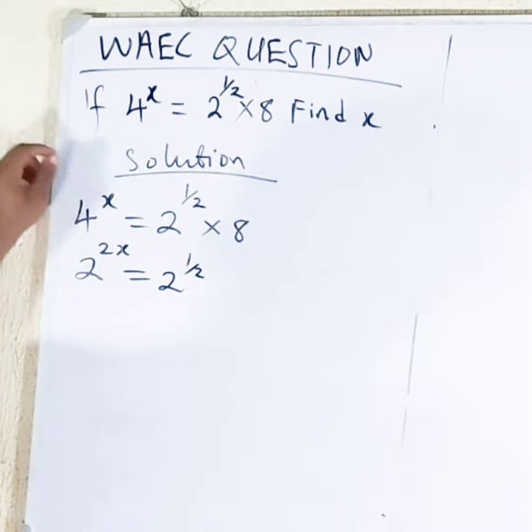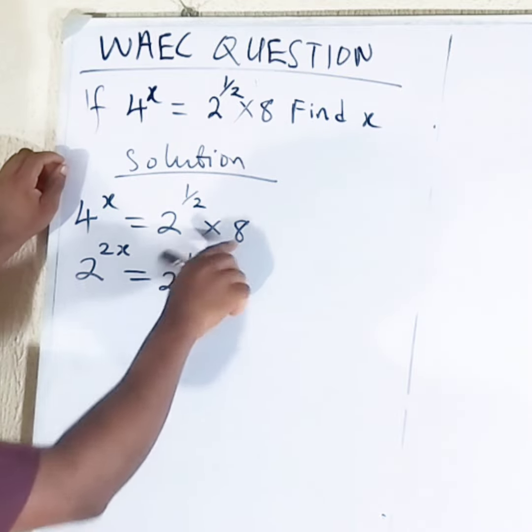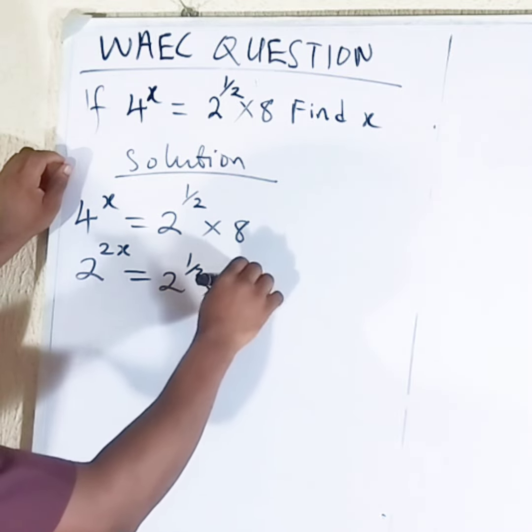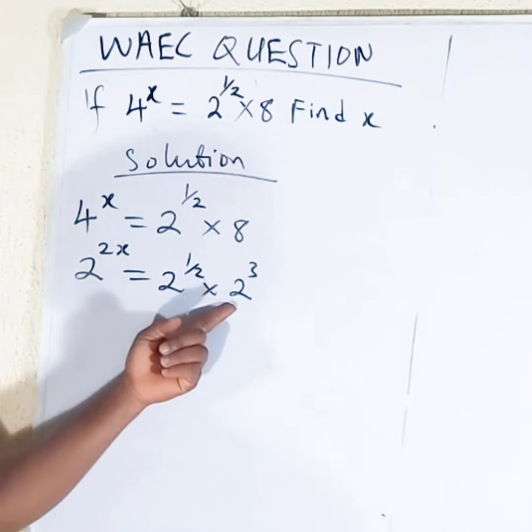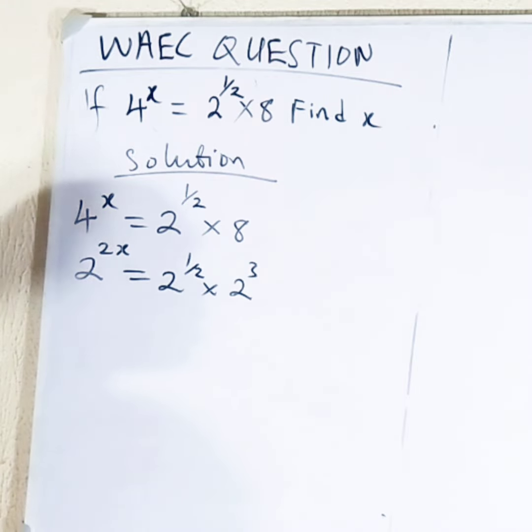2 raised to the power half. 8 means 2 raised to the power 3. Of course you know 2 raised to the power 3 means 2 times 2 times 2 which will give you 8.